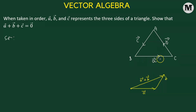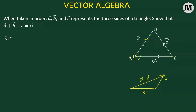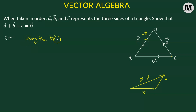In our case, vector a and vector b are positioned correctly — the terminal point of vector a coincides with the initial point of vector b. However, vector c is in the opposite direction. We need it going from vertex b to vertex a in order to apply the triangle law of vector addition.